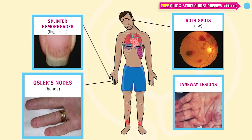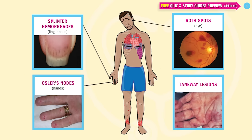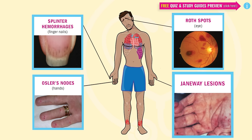For Osler's nodes, remember Ozzy Osbourne, the guitar player who has tattoos all over his hands. Our last and most unique sign of infective endocarditis that usually shows up on tests is called a Janeway lesion. These are flat circular lesions on the palms and soles of the feet that kind of look like burn marks. Remember: Janeway rhymes with ashtray — like someone's been putting out cigarettes on the palms and soles of the feet.